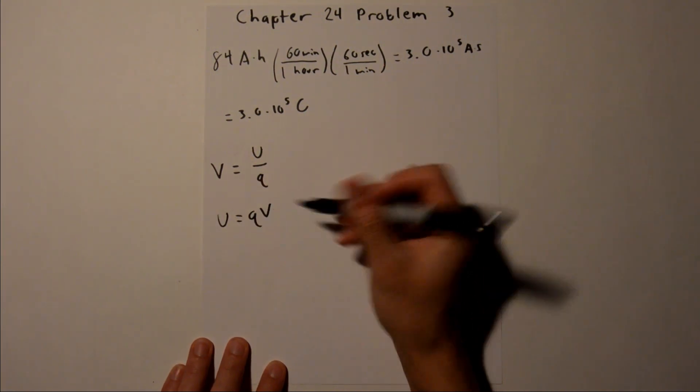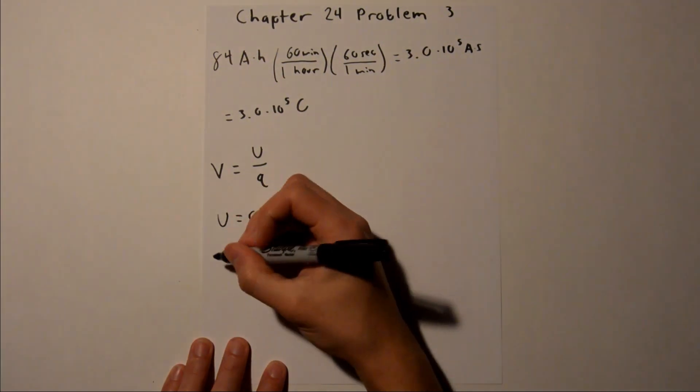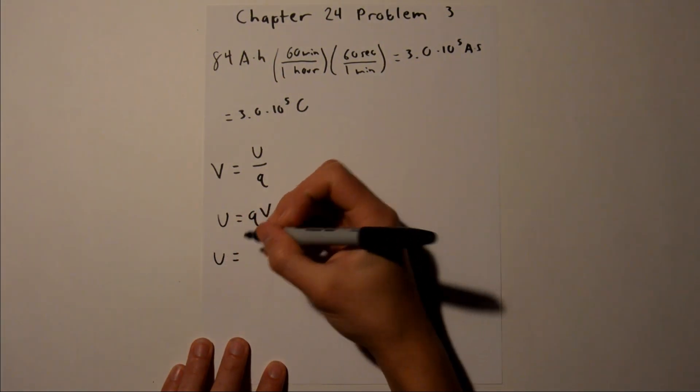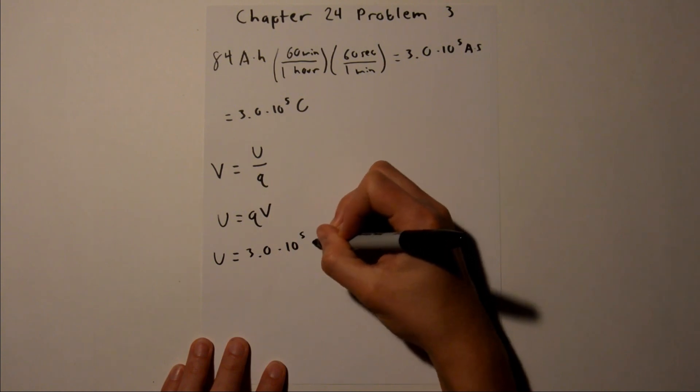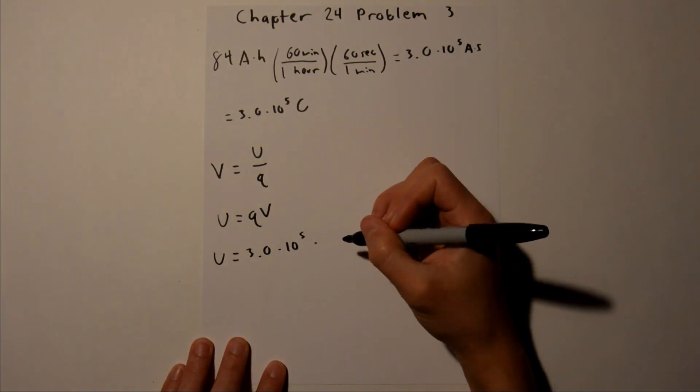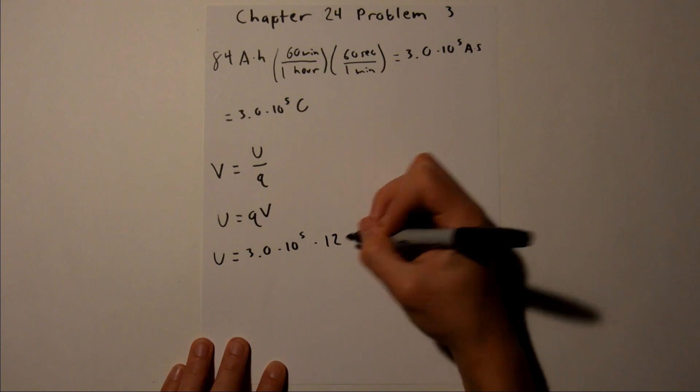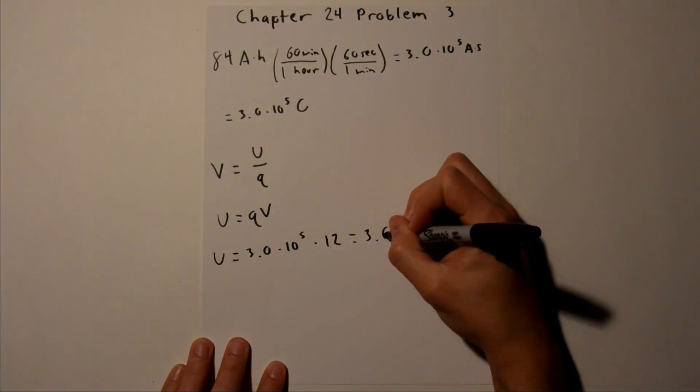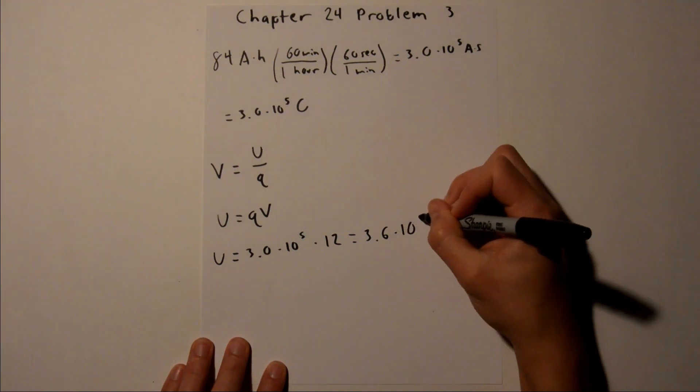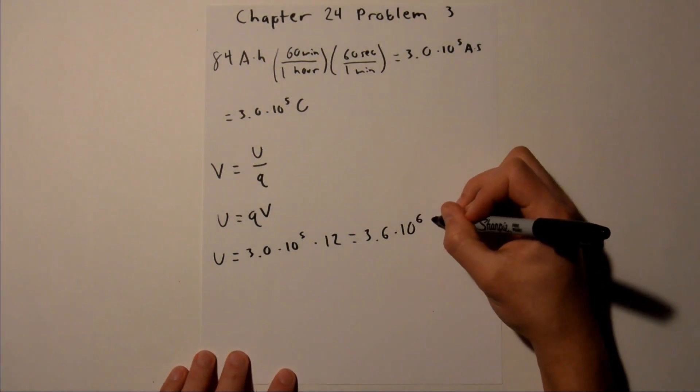V we are given, and Q we found in the last part, so we can plug those in. U equals 3.0 times 10 to the 5th, and our potential is 12 volts. And when you plug that into your calculator, you should get 3.6 times 10 to the 6th. And our unit for energy is joules.